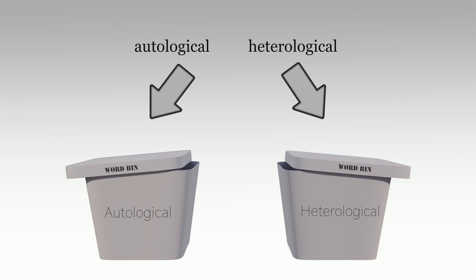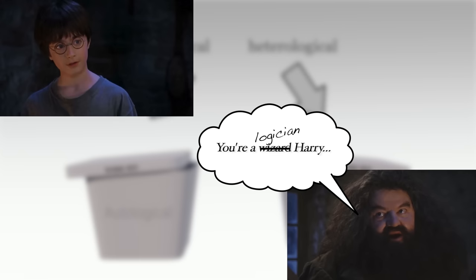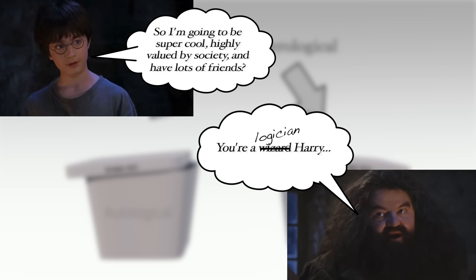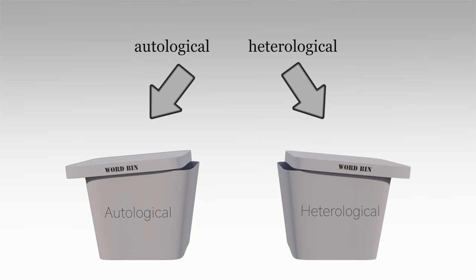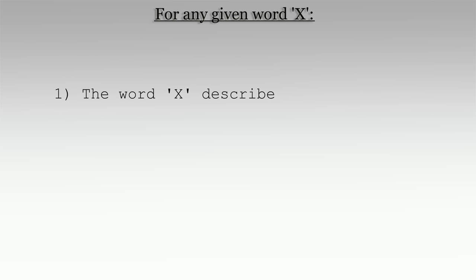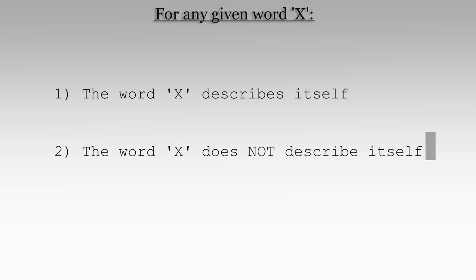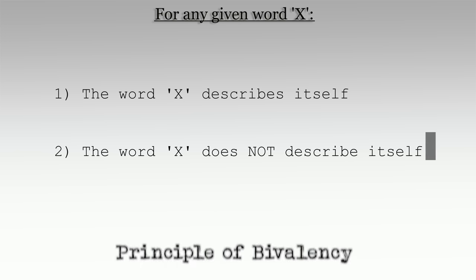If you were able to follow that, congrats, you're a natural logician. The rest of us, however, are sitting here with our eyeballs crossed, wondering what the heck just happened. Well, it's actually pretty easy to see if we just take things a little slower and write out some simple sentences. Let's start by noting that, for any given word x in the English language, one of the following two sentences must be true: 1. The word x describes itself. 2. The word x does not describe itself. Let's term this principle — the fact that a word either describes itself or doesn't — the principle of bivalency.